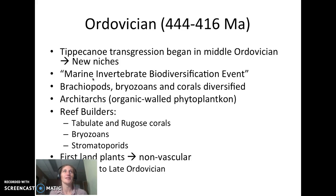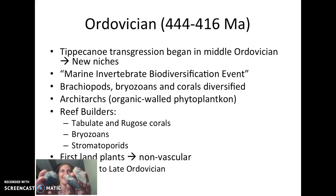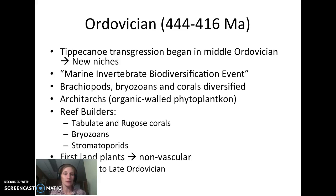A lot of people call this the marine invertebrate biodiversification event, because we see brachiopods, bryozoans, and corals starting to diversify. The acritarchs — organic-walled phytoplankton — were very common and are what all of these filter feeders are eating, sucking material out of the sea. Our reef builders are the tabulate and rugose corals, bryozoans, and stromatoporids that really made up those big Ordovician reefs. On land, we do have some exposed land; our first nonvascular plants start to show up in the middle to late Ordovician.